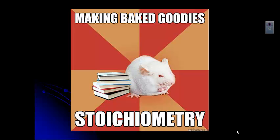You're probably wondering why I put up a mouse and why it says 'making baked goodies.' Stoichiometry is kind of like a recipe. Anybody who bakes knows that it's really important to have the right proportion of ingredients. If you use too many eggs or not enough butter or too much flour, you won't come out with a nice cake or cookies or brownies. So it's really important to have those ratios of the ingredients be exactly right.